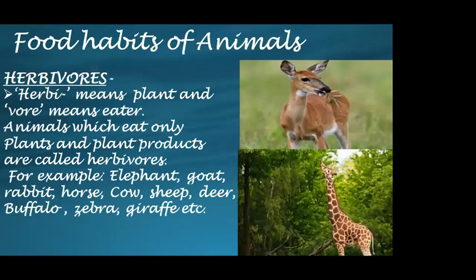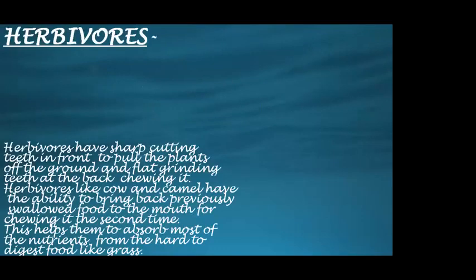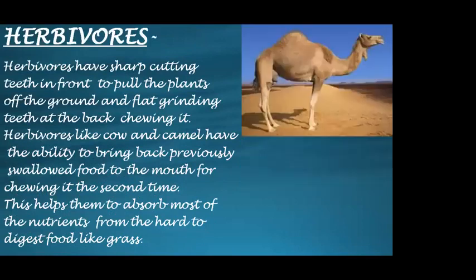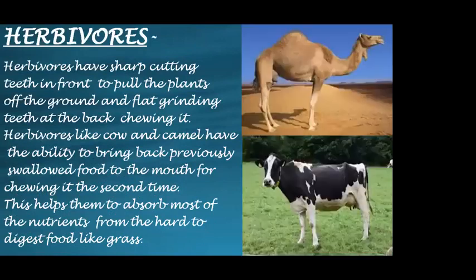What are the special features of these herbivores? Herbivores have sharp cutting teeth in front to pull the plants off the ground and flat grinding teeth at the back to chew the food.